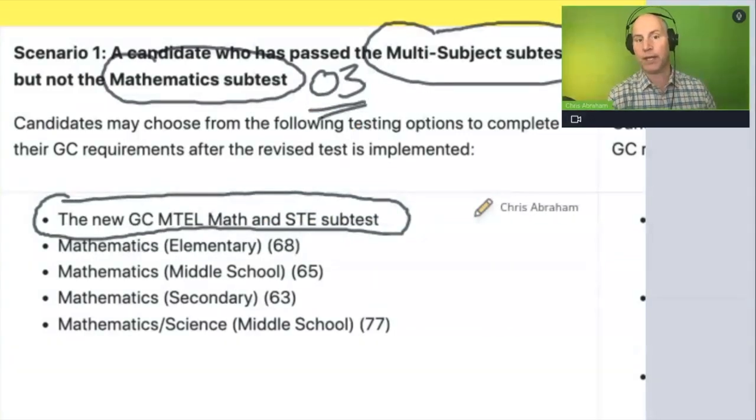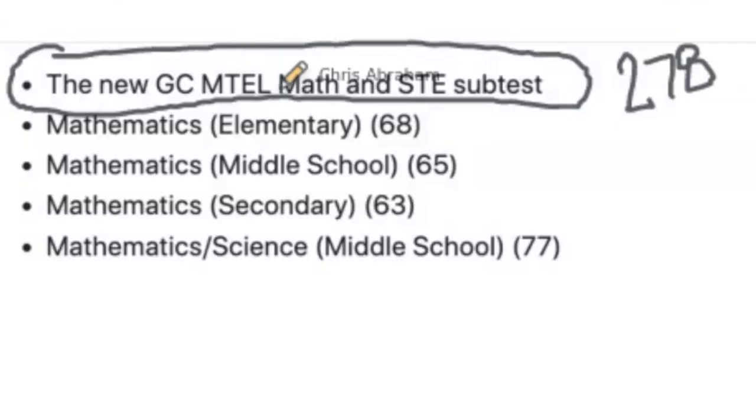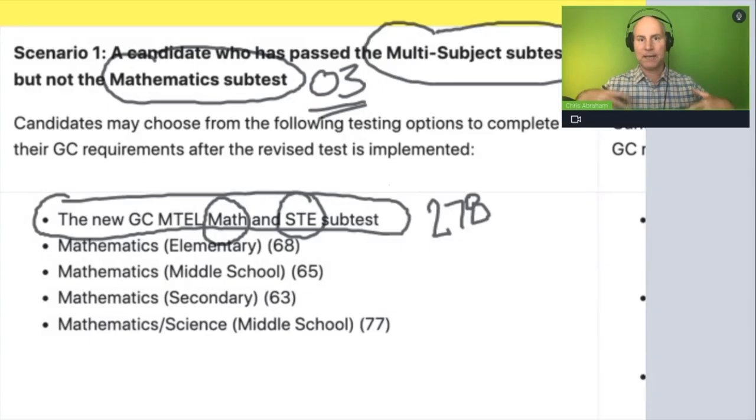That is the replacement of the O3 math exam, and it's called the 278. This is a math and science, general curriculum math and science, technology, and engineering subtest. This is probably the most likely replacement for the O3.